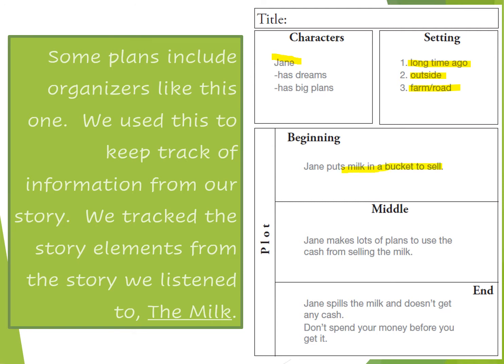In the beginning, Jane puts milk in a bucket to sell. In the middle, Jane makes lots of plans to use the cash from selling the milk. But at the end, Jane spills the milk and doesn't get any cash. So our moral of the story is: don't spend your money before you get it. I included all of those pieces on my planner.